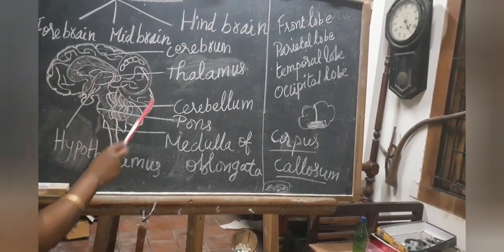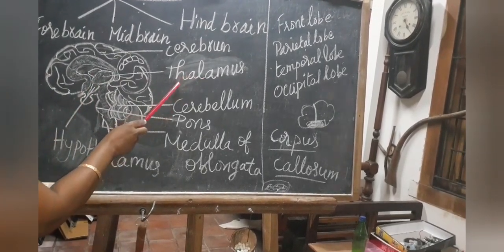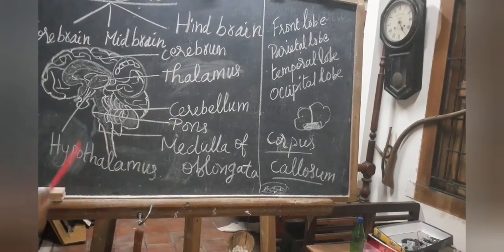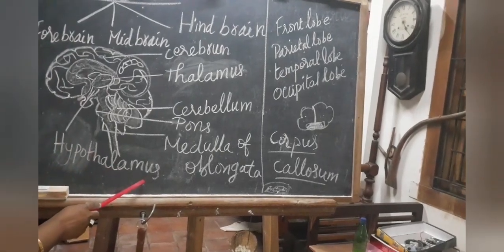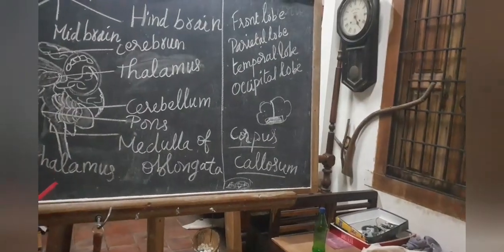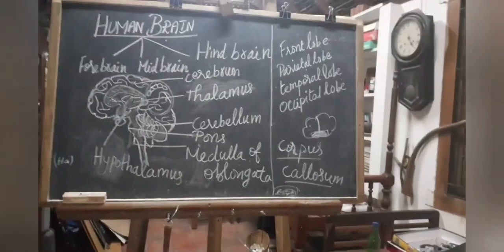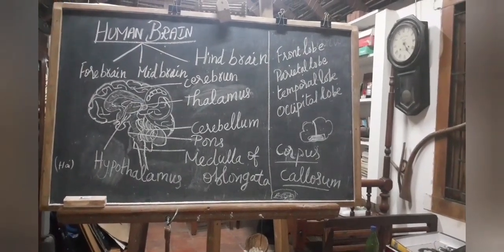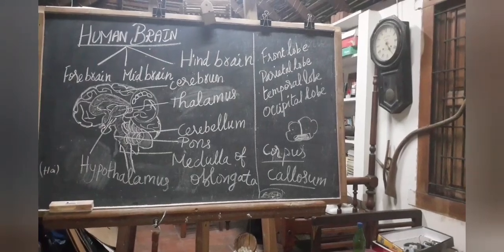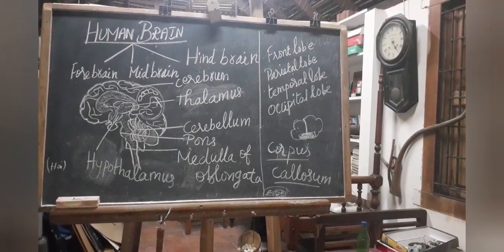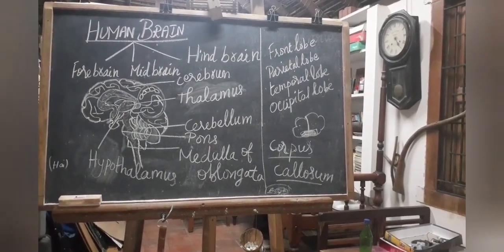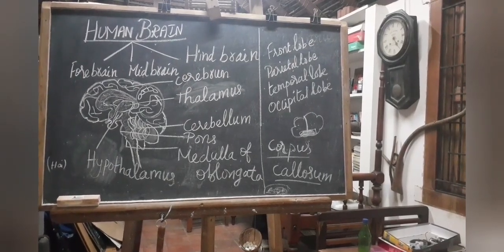The brain contains a layer called the thalamus, which is the relay center for sensory and motor signals. Below the thalamus is the hypothalamus, which controls involuntary functions such as hunger, thirst, sleep, sweating, sexual desire, anger, fear, water balance and blood pressure. It also regulates thermoregulation and controls the secretion of the pituitary gland, forming the link between the nervous system and the endocrine gland.